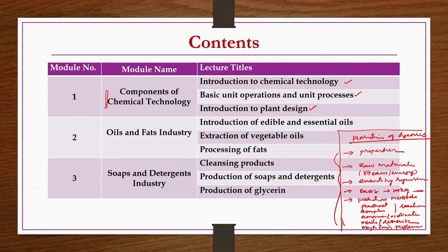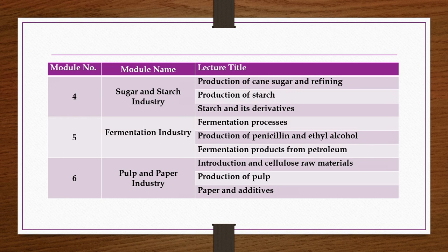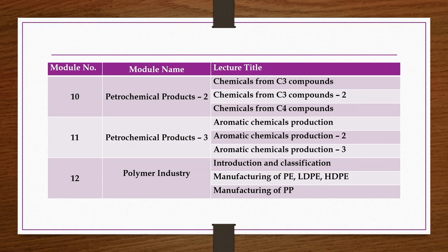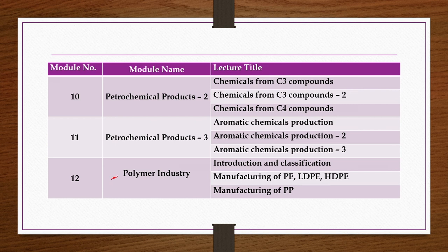We start with oils and fats industries, followed by soaps and detergents, then sugar and starch industry, fermentation industry, pulp and paper industry, rubber industry, etc. Then we will see petroleum refinery and petrochemical products. Petroleum refinery and petrochemicals is itself a separate discipline nowadays, but no petroleum refinery or petrochemical industry can survive without chemical engineering principles. So it is necessary for chemical engineering undergraduate students to understand the basics of petroleum refinery and petrochemical production plants. Finally, we conclude the course with the polymer industry.